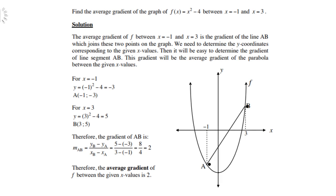Let's look at our first example. Find the average gradient of the graph of f(x) = x² - 4, which is of course a parabola, between the points x = -1 and x = 3. The average gradient of f between -1 and 3 is the gradient of the line AB which joins these two points on the graph. We need to determine the y-coordinates corresponding to the given x values.